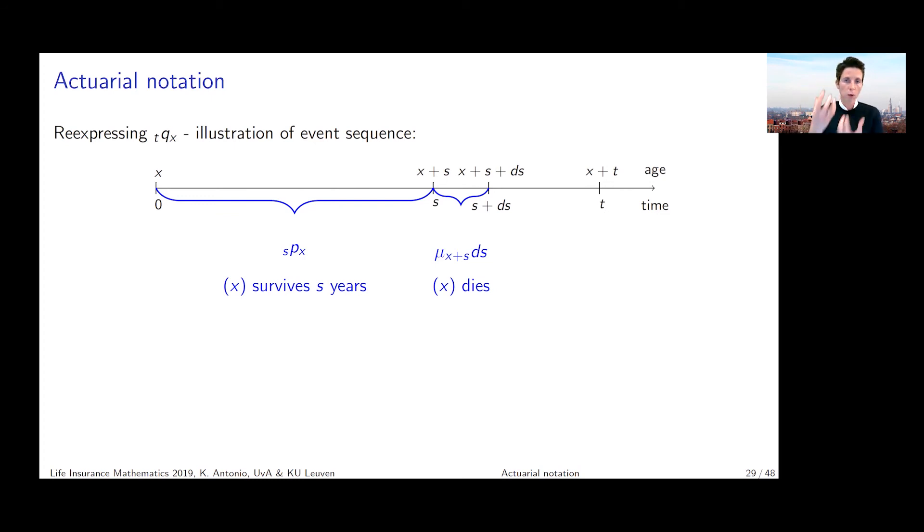What we then want to pick is we're going to pick one point in time, time point s, and we're going to say one event that is captured in the probability _tq_x, one such event is the scenario where our policy holder survives until age x plus s and then dies right after reaching age x plus s.